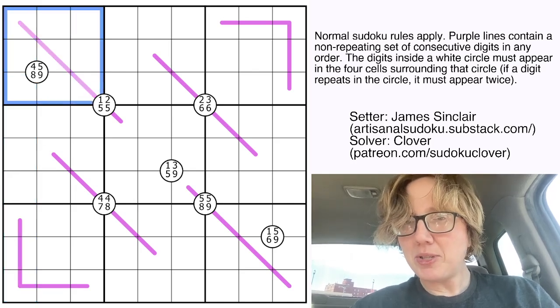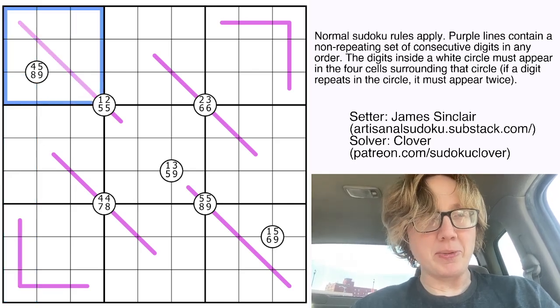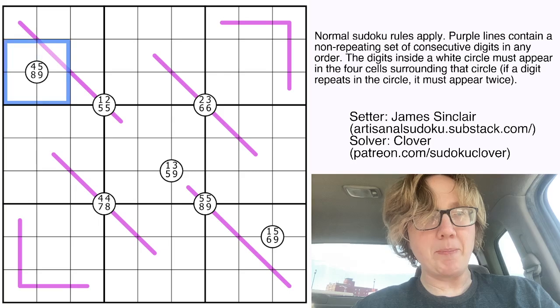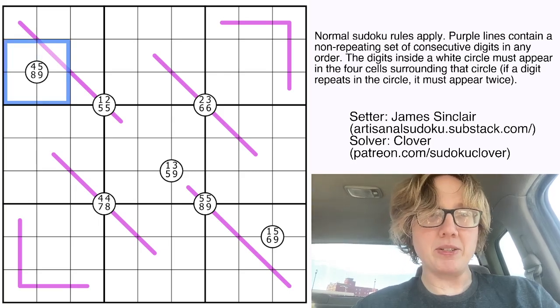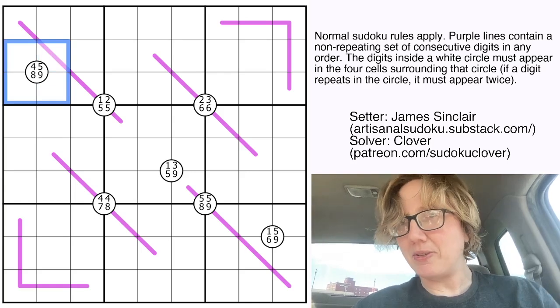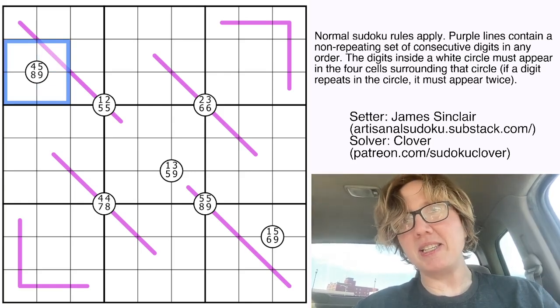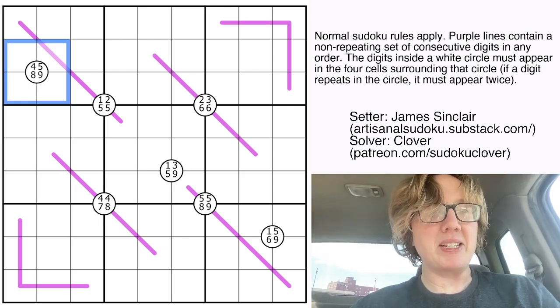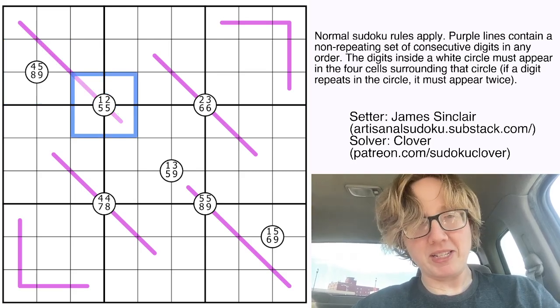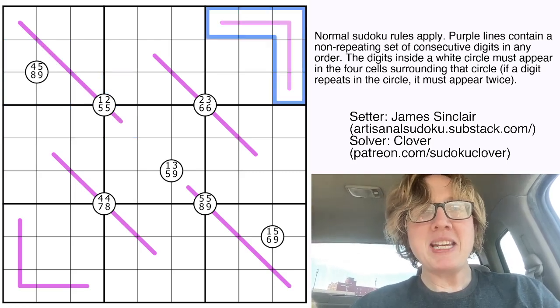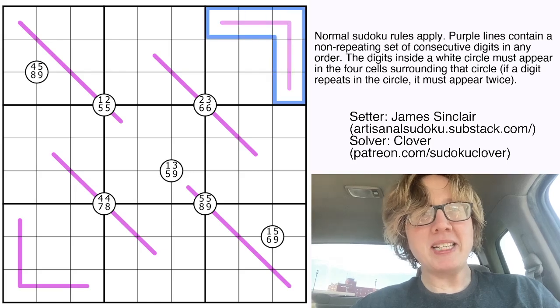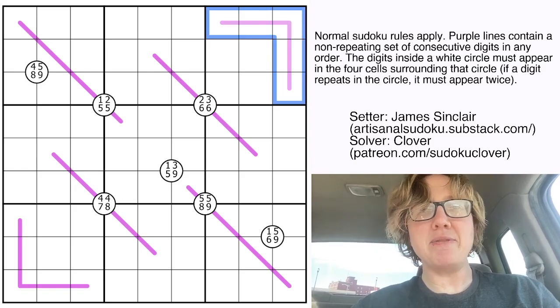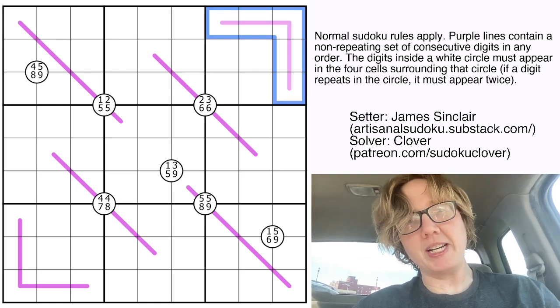And then we also have two Sudoku variants going on here. First of all, quadruples. Those are these white circles, and they tell you the set of digits that appear somewhere in the four cells surrounding that circle. And in some places in this particular puzzle, a digit appears twice in a circle, which means that digit has to appear twice in the four surrounding cells. These pinky purple lines are run band lines, and what those indicate is that you have a set of consecutive digits, but those digits can appear in any order on the line.